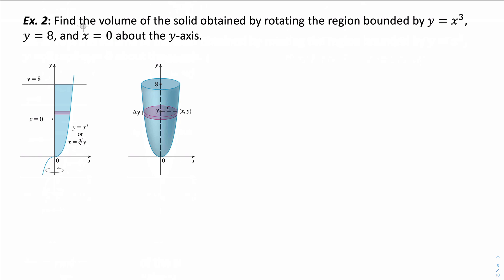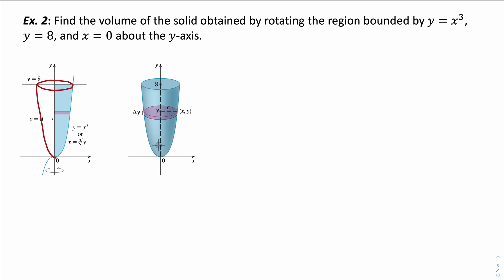In this next situation, we want to find the volume of the solid obtained by rotating the region bounded by y equals x³, y equals 8, and x equals 0 about the y-axis. Since we're rotating about the y-axis, if we tried to use vertical cross-sections there would be a lot of things changing. So to avoid dealing with as many functions, we'll take horizontal cross-sections — stacking vertically — which means we'll integrate with respect to y.